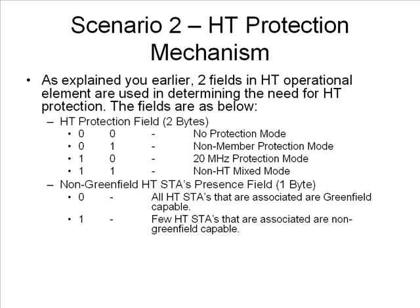When using an HT-mix mode format preamble, the rate subfield in the legacy OFDM signal field of HT frame headers is always set to 6 Mbps. The length subfield on the L-SIG field of HT frames with an HT-mix mode physical layer preamble always contains a value that represents a duration corresponding to the length of the rest of the PPDU. That is why this is called physical layer spoofing.